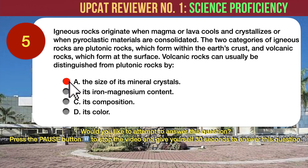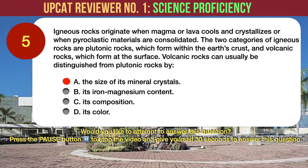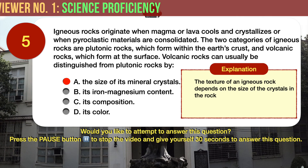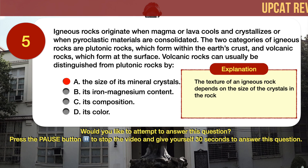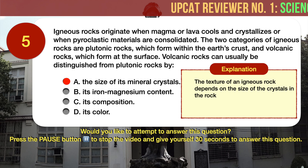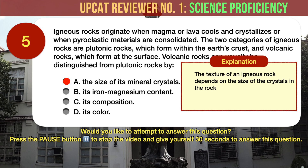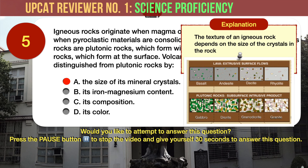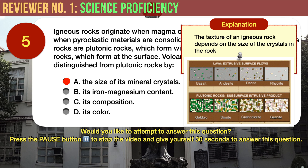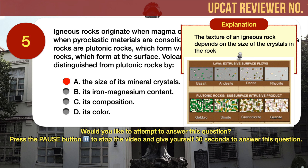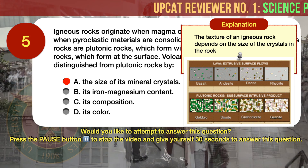The correct answer is A: the size of its mineral crystals. The texture of an igneous rock depends on the size of the crystals in the rock, and this tells us if the rock is plutonic or volcanic. When magma cools underground, it cools very slowly; when lava cools above ground, it cools quickly. When magma and lava cool, mineral crystals start to form in the molten rock. Plutonic rocks, which cool slowly underground, have large crystals because the crystals had enough time to grow. Volcanic rocks, which cool quickly above ground, have small crystals because the crystals did not have enough time to grow very large.